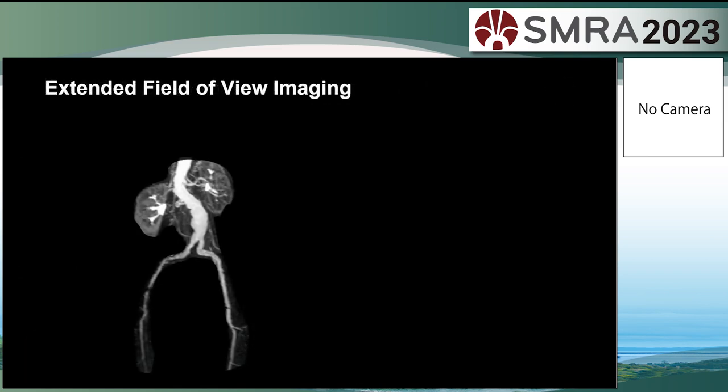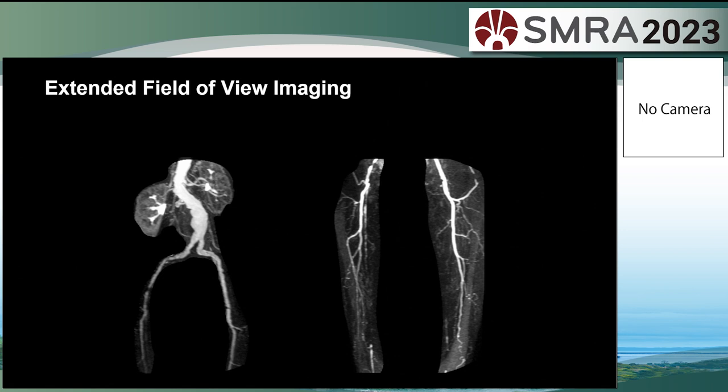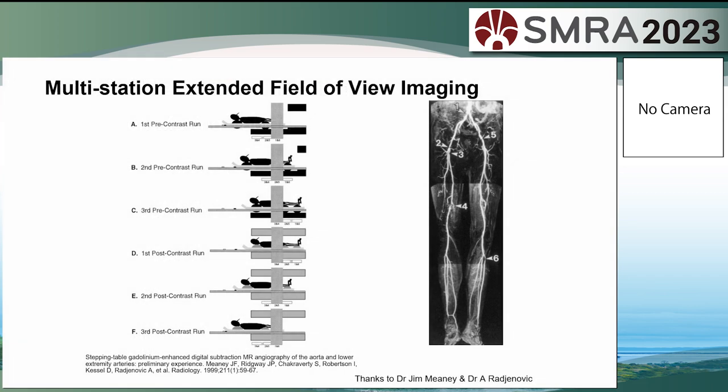But we assumed we wanted more. We wanted to see not just one station, but what was going on below it. Our first attempt at seeing below the aortoiliac segment involved releasing the brakes on the scanner and manually moving the patient into the magnet, following the contrast down the legs. We called this non-moving table contrast-enhanced MRA for peripherals.